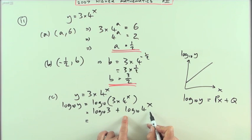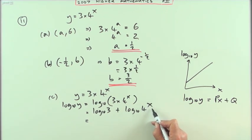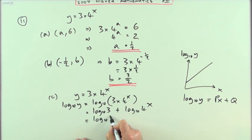This logarithm can then be split up because if you've got a power as part of the number it's acting on, that can come out as a factor. So I've got log₁₀ of 3 plus x times log₁₀ of 4.